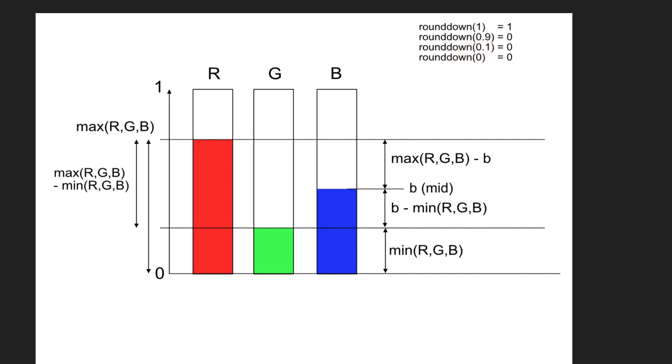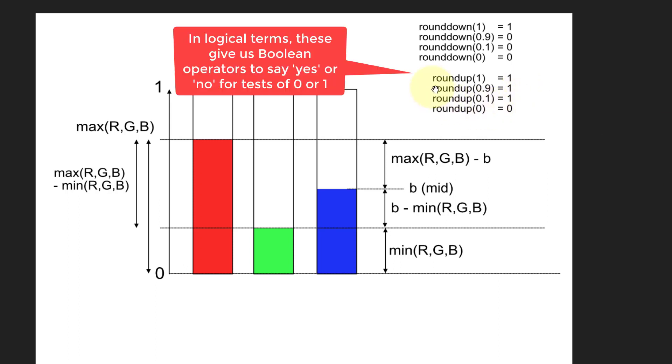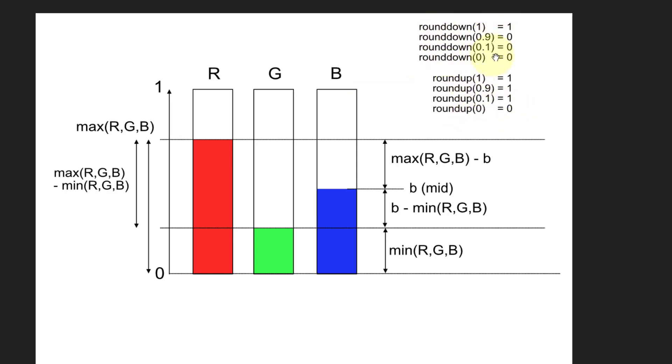Then also we have round up, which works the other way around. And that says if I've got any number here, it's always going to go up to 1. And so then it's only going to be 0. I'm going to round up 0, that's going to stay at 0. So round down is a test for whether it's 1 and round up is a test for whether it's 0.